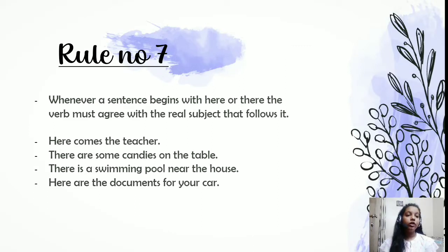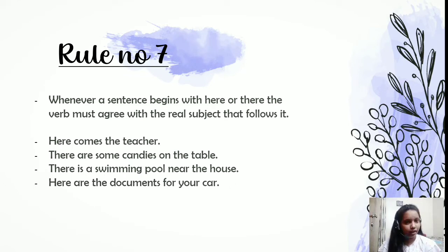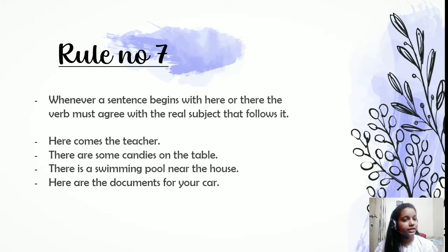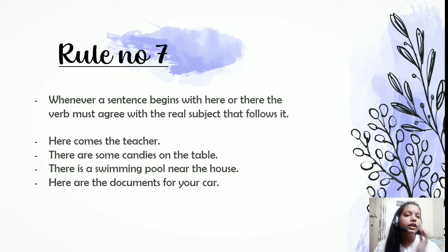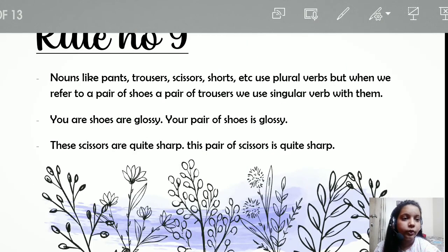Rule seven: when a sentence begins with 'here' or 'there,' the verb must agree with the real subject, which often appears at the end of the sentence. For example: 'here comes the teacher,' 'there are some candies,' 'there is a swimming pool,' 'here are the documents.' The verb agrees with the actual subject regardless of the inverted word order.